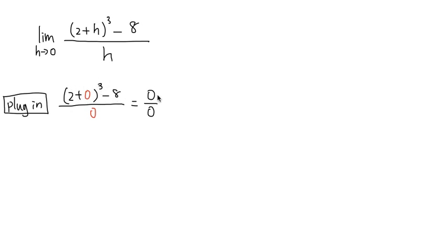Minus another 8, we have 0 on the top. And when you plug in 0 into the denominator h, which is also going to be 0. So we have 0 over 0, that means we have to do more work.